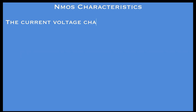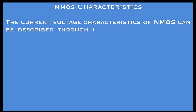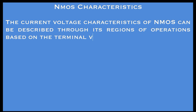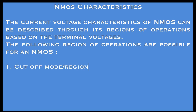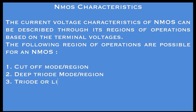NMOS characteristics. The current-voltage characteristics of the nMOS can be described through its region of operations based on the terminal voltage. The following regions of operations are possible for an nMOS.